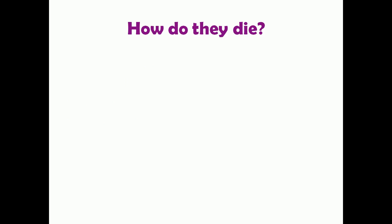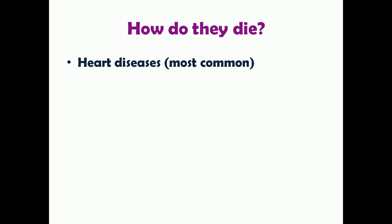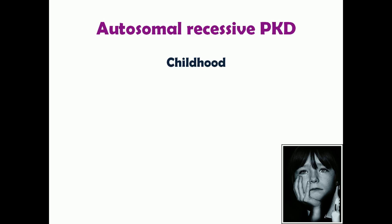Regarding cause of death — one might assume renal failure is the main cause, but based on various studies, the most common cause of death in polycystic kidney disease patients is heart disease. The second most common cause is infections. So polycystic kidney disease patients do not primarily die due to renal failure — they mostly die due to heart disease, with infections being the second most common cause.